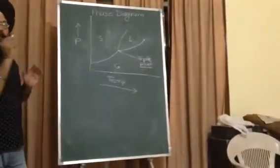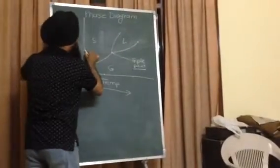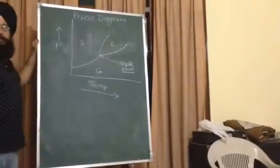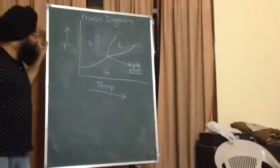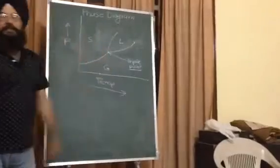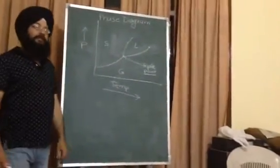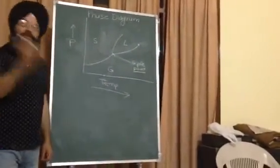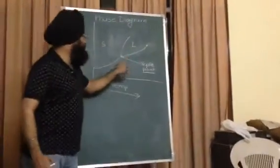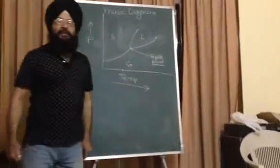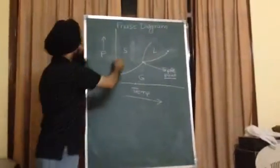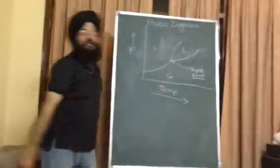The triple point is a unique combination of pressure and temperature at which all three phases — solid, liquid, and gas — exist simultaneously. In other words, all three phases coexist at this particular combination of temperature and pressure.